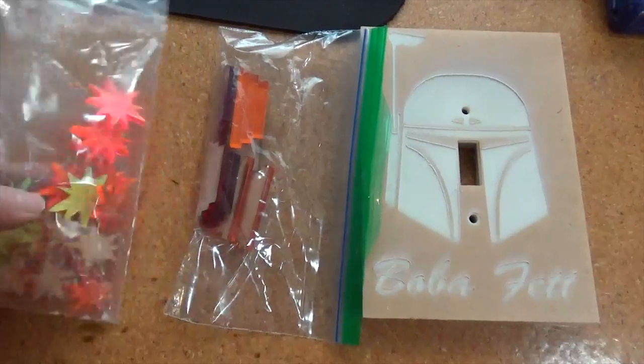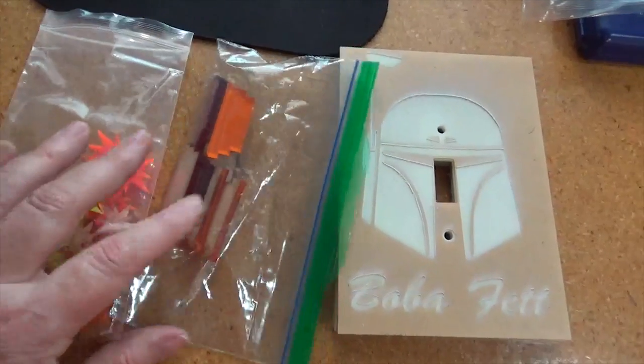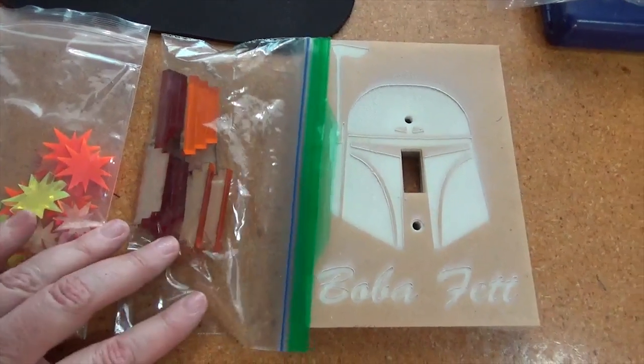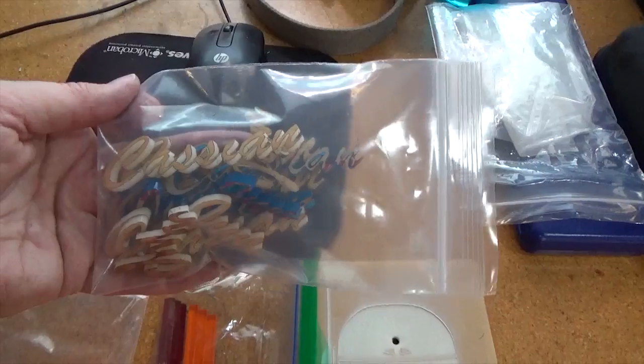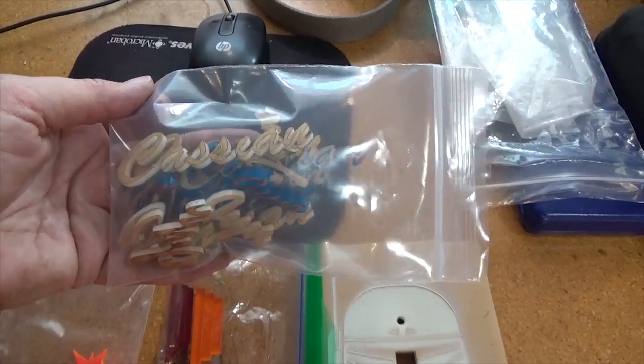My standard approach is to cut everything in multiple different colors of acrylics so that I have options to experiment with afterwards. For example the names I cut in both ivory and blue.